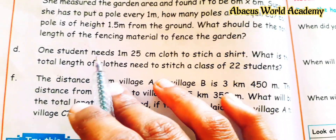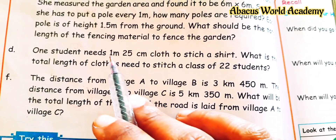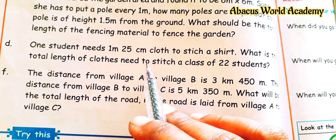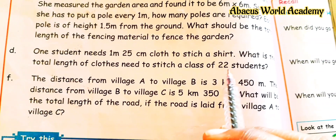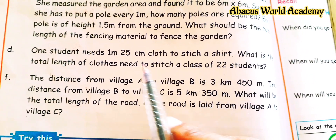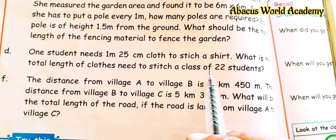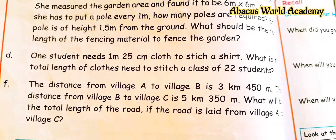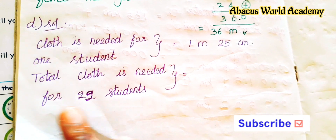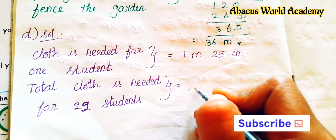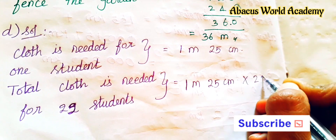One student needs 1 meter 25 cm cloth to stitch a shirt. What is the total length of cloth needed to stitch shirts for a class of 22 students? So cloth needed for 1 student is equal to 1 meter 25 cm, multiplied by 22.